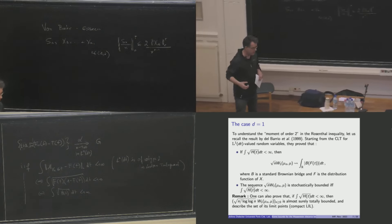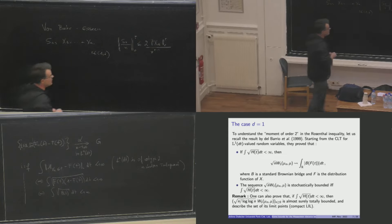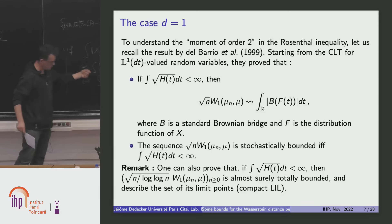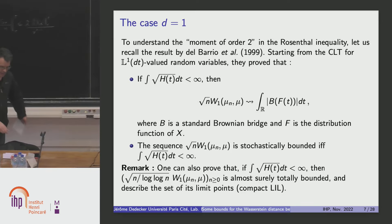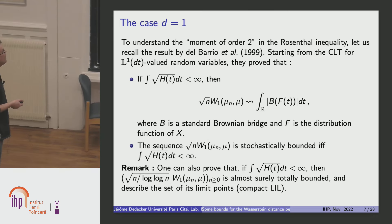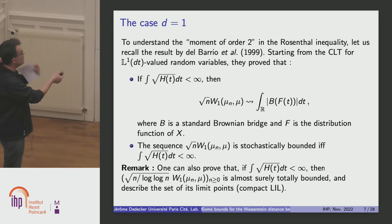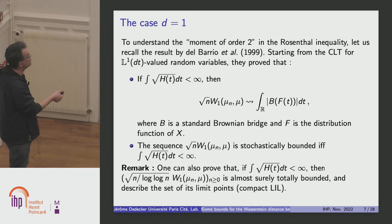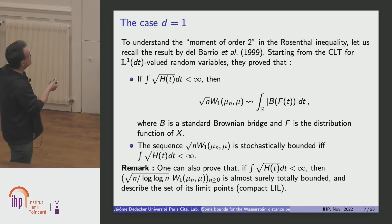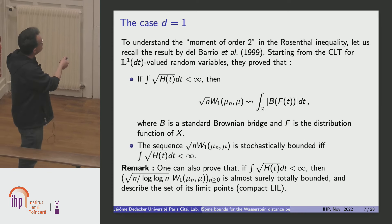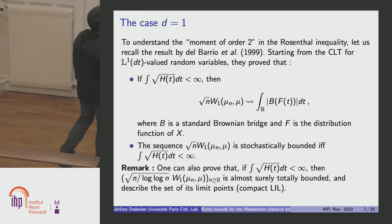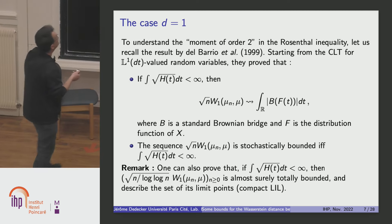This explains why you get this condition. In the one-dimensional inequality, the central limit theorem will not be true with a moment of order 2, but requires a stronger condition. You can also prove an almost sure result, still under this condition of the integral of the square root of H being finite. Then you can prove a compact law of the iterated logarithm, giving the almost sure rate of convergence.